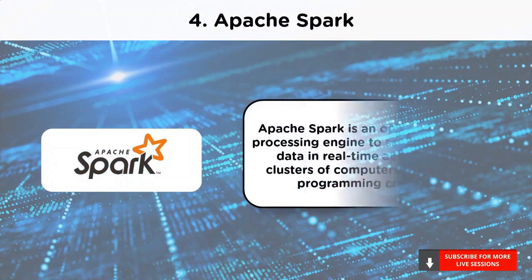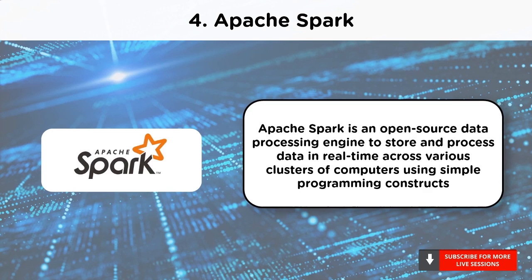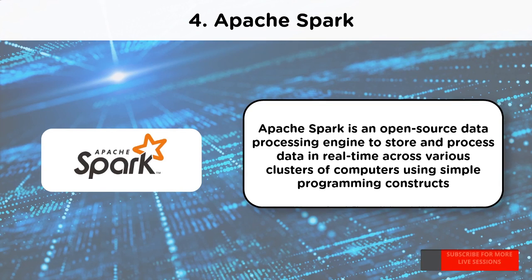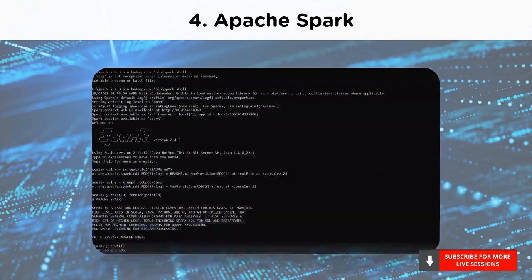At number 4, we have Apache Spark. Apache Spark is an open-source engine developed specifically for handling large-scale data processing and analytics. Spark offers the ability to access data in a variety of sources including Hadoop Distributed File System (HDFS), OpenStack Swift, Amazon S3 and Cassandra. It allows you to store and process data in real-time across various clusters of computers using simple programming constructs. This is how the interface of Apache Spark looks like.